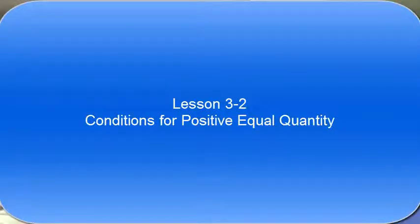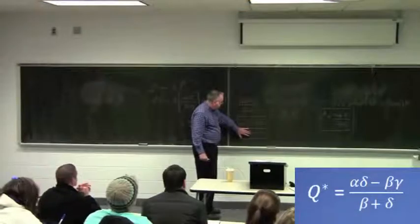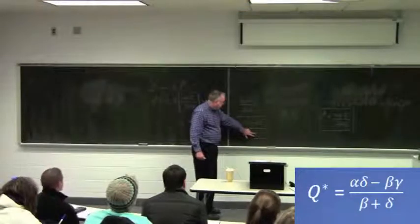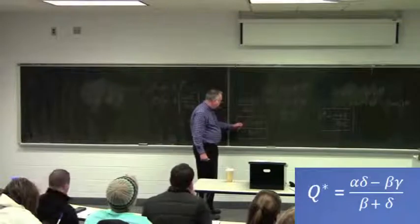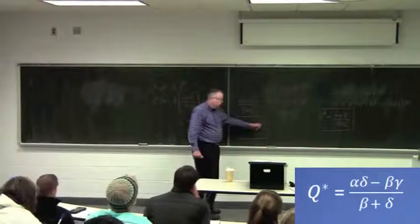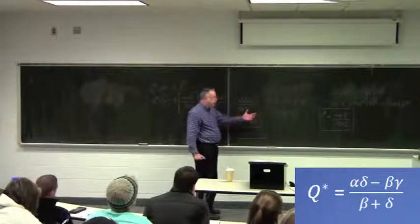If you just look at this numerator, notice by assumption, beta and delta are positive. Also alpha and gamma are positive — that's by assumption.